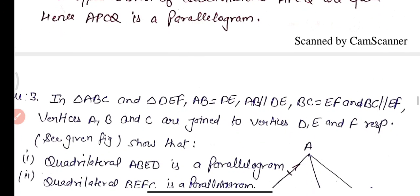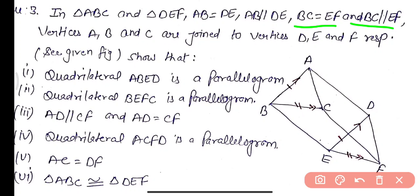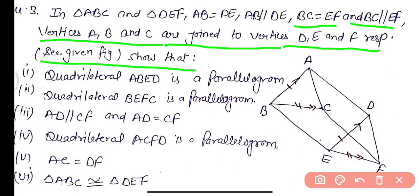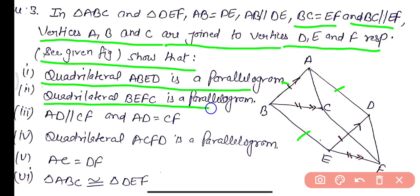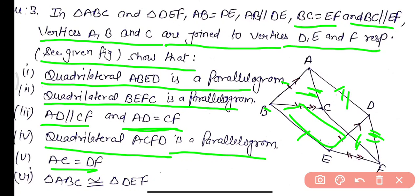Practice Question 3: In triangles ABC and DEF, AB equals DE and AB is parallel to DE, BC equals EF and BC is parallel to EF. Vertices A, B, C are joined to vertices D, E, F respectively. We need to prove that quadrilateral ABED is a parallelogram, BEFC is a parallelogram, AD is parallel to CF, AD equals CF, quadrilateral ACFD is a parallelogram, and AC equals DF.